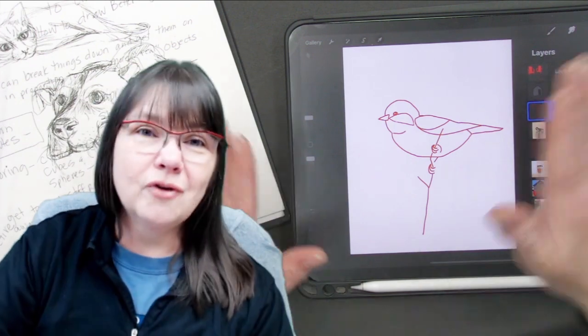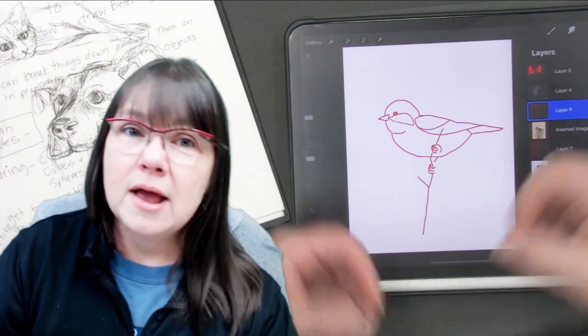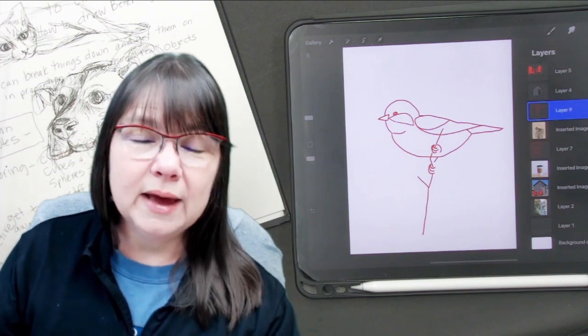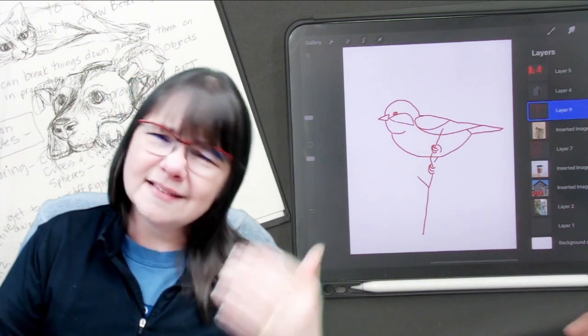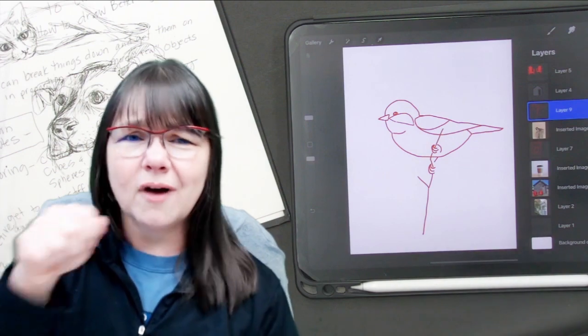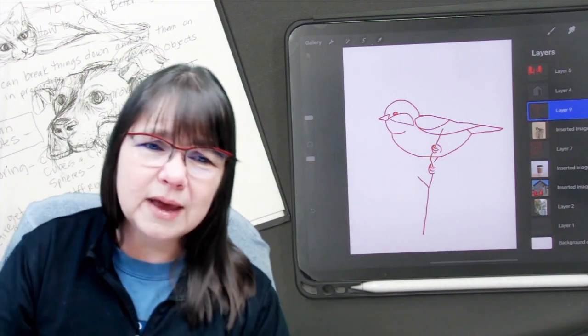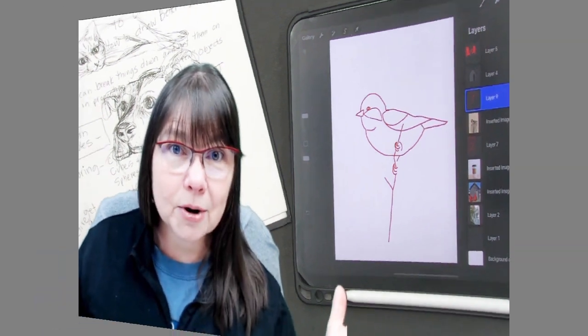And be able to draw things later. If somebody says, hey, I need a bird, can you draw me a bird really quick? And you can go, oh yes, I have a bird up here. I can draw the egg, the circle on top, the little half circle for his wing, and look at that, I've got a bird.